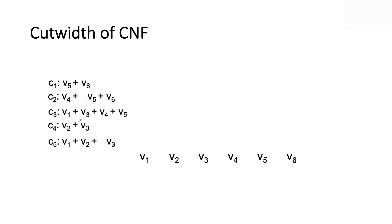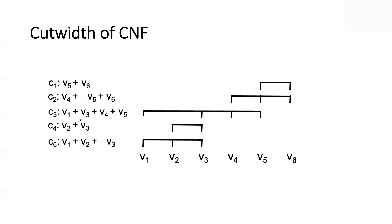To define cut width of a CNF, I look at a variable order and define the cut width of that variable order — similar to how for tree width we used an auxiliary creature, the tree decomposition. Here the auxiliary notion is much simpler: a variable order. You lay out your clauses, and define the notion of a cut — anywhere between these variables you do a cut and see how many clauses cross. In this case, clauses 3, 4, and 5 cross, giving a cut set at that point.